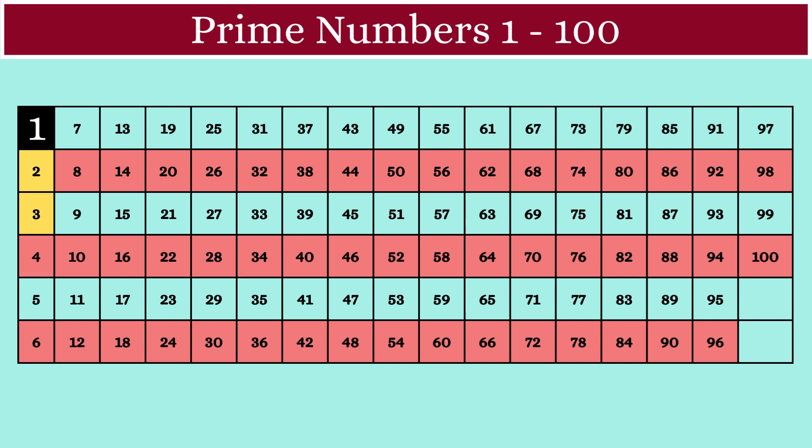If you note carefully, this row and this row are all multiples of 3. So, they are all composite numbers.